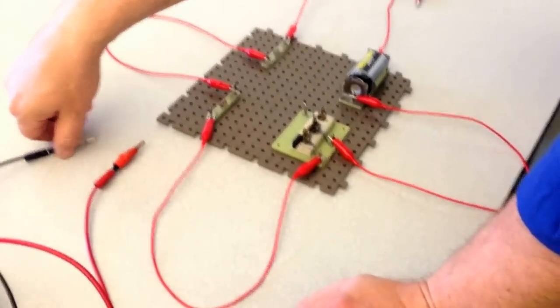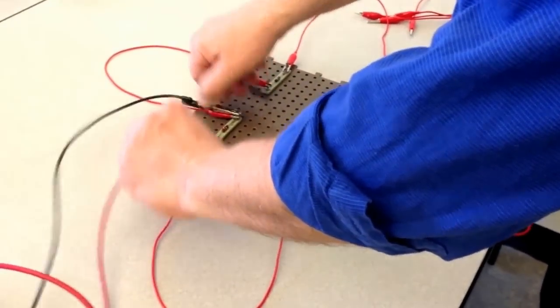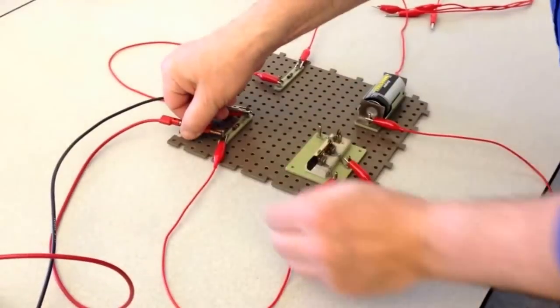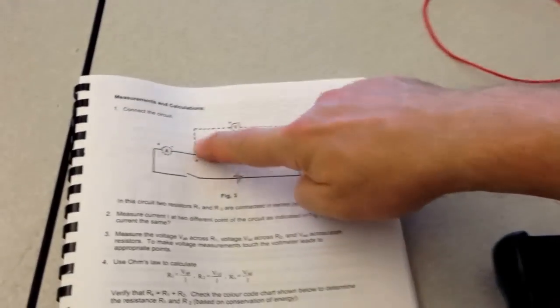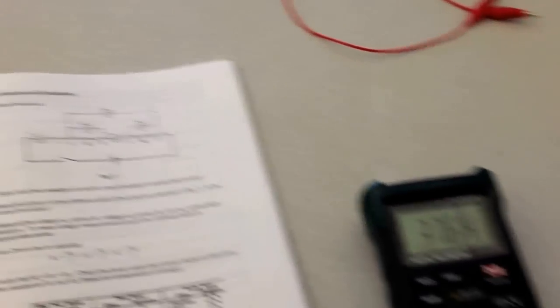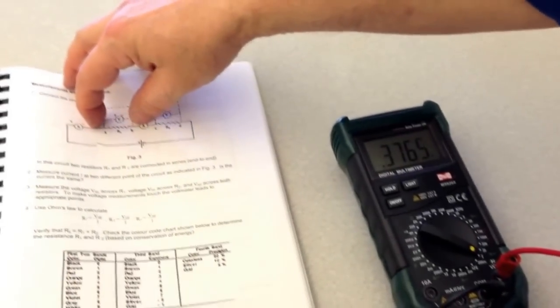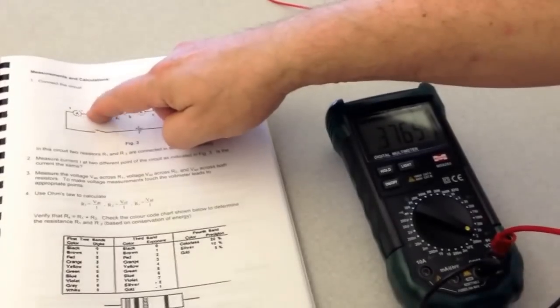Now, if we attach this voltmeter across R1, remember, voltmeters are connected in parallel. Why in parallel? Because we want to measure the voltage across components.